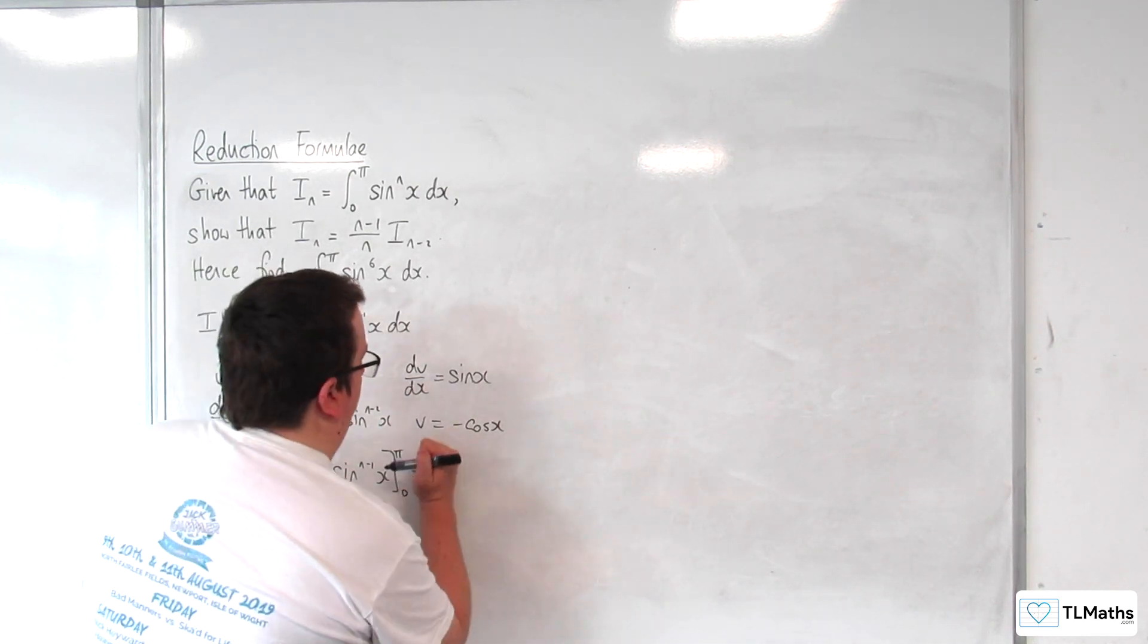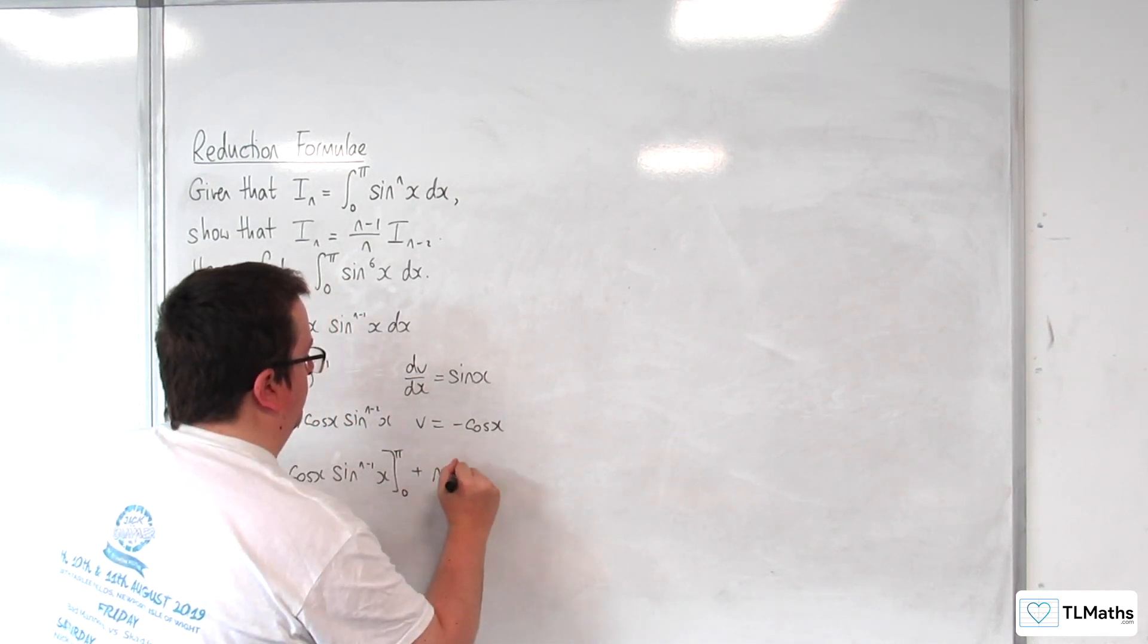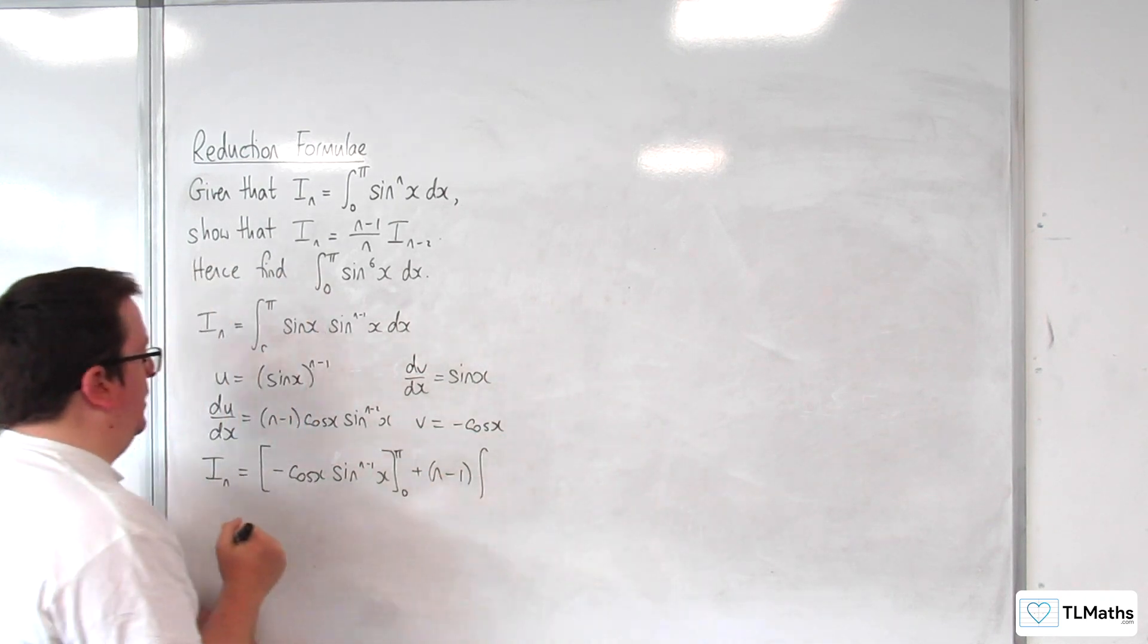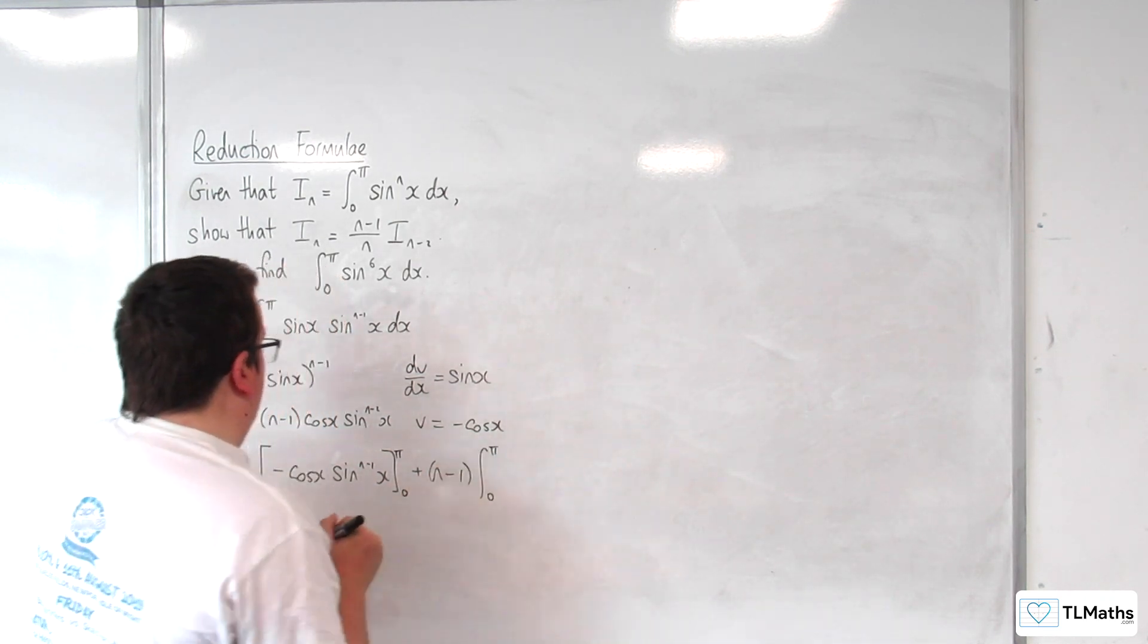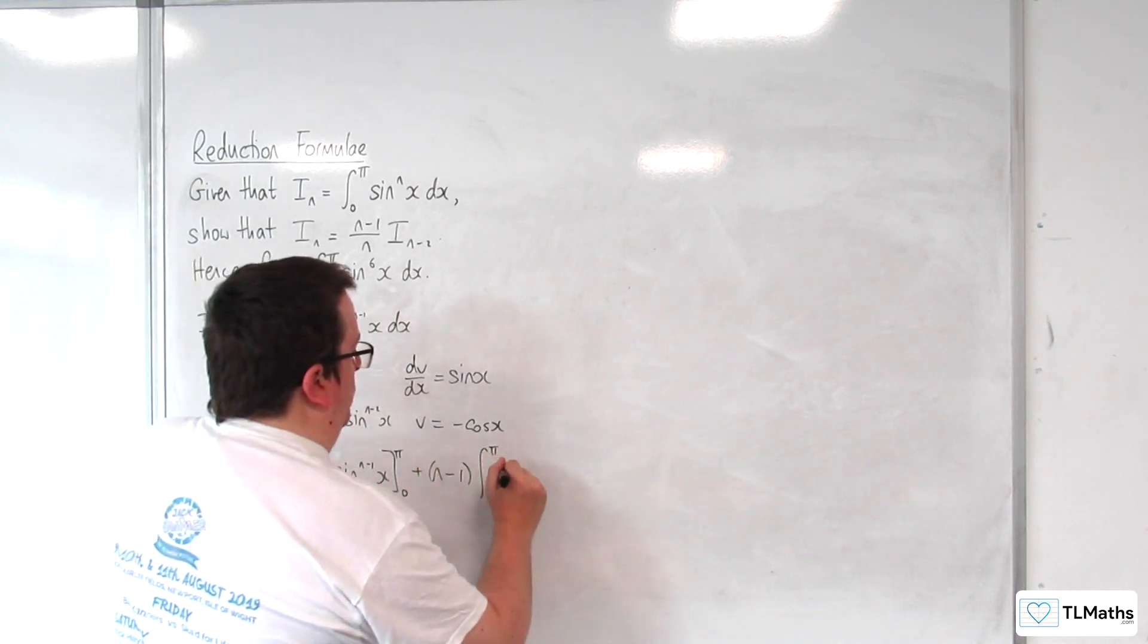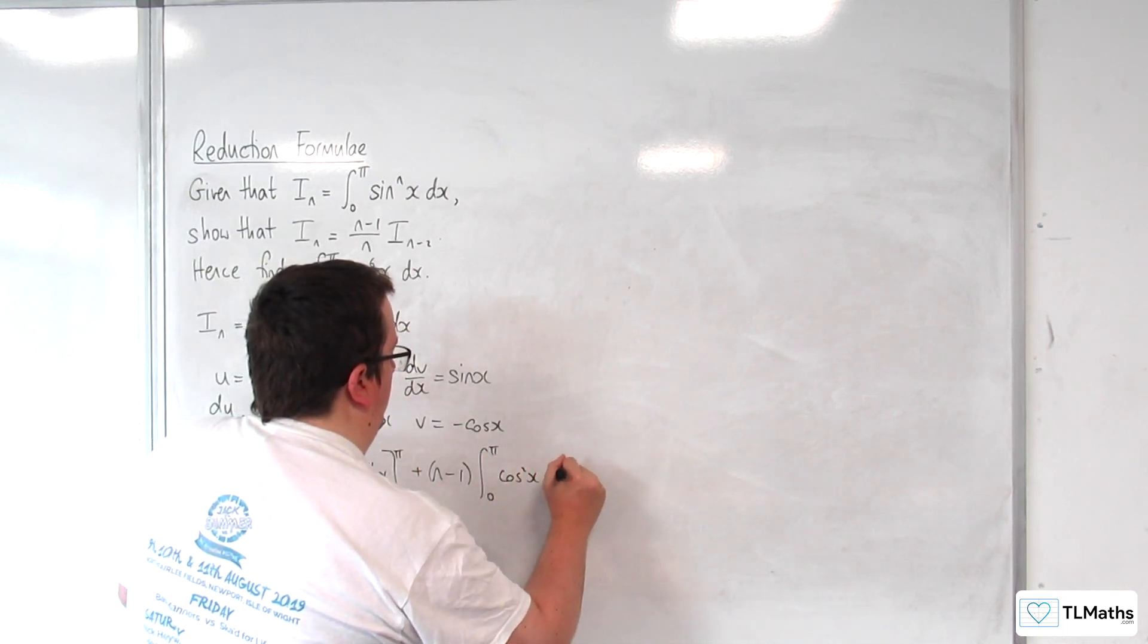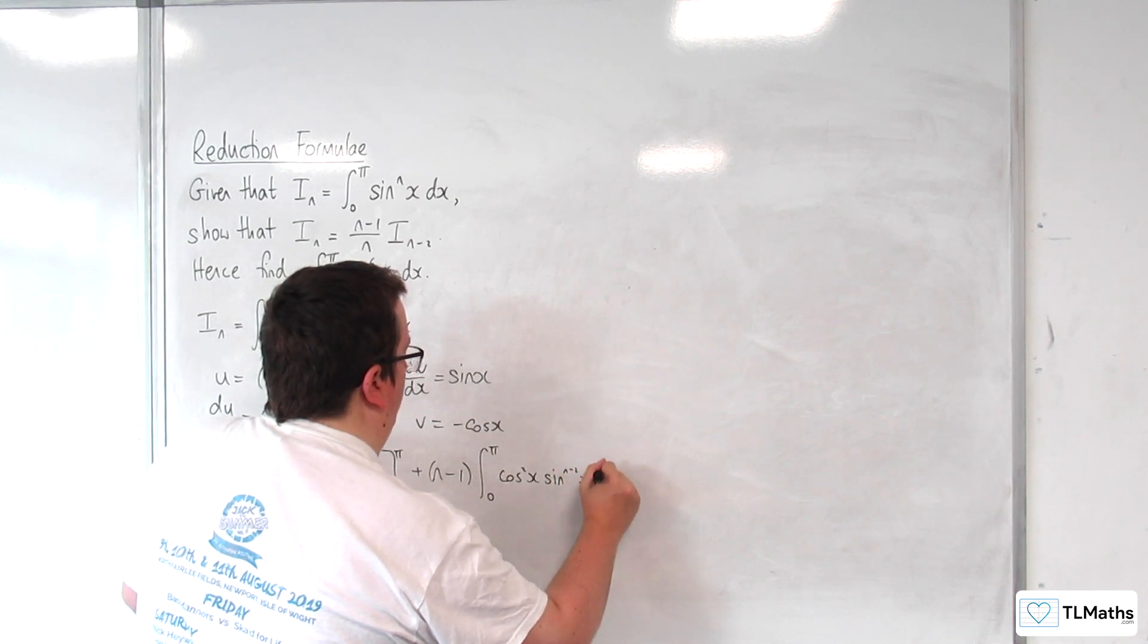The n-1 I can bring outside the integral - it's just a constant. From 0 to π, I'm going to have cos²(x) times sin^(n-2)(x) dx.